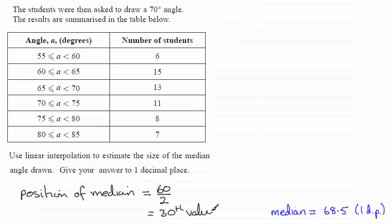Now we've got to find out which class interval that 30th value is in. So what I'm going to do is set up a cumulative frequency column. So we've got six students that draw the angle less than 60 degrees. And then we've got the 6 plus 15, a total of 21 students who draw it less than 65 degrees.